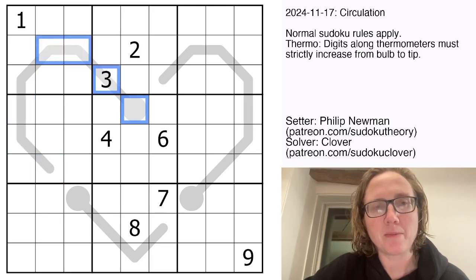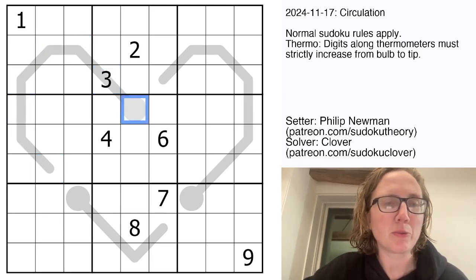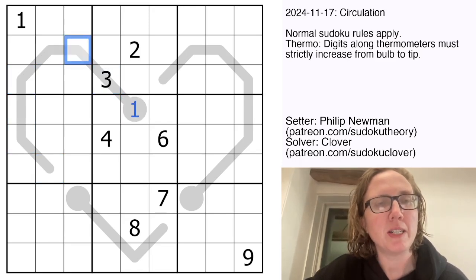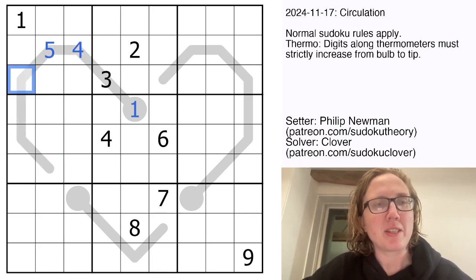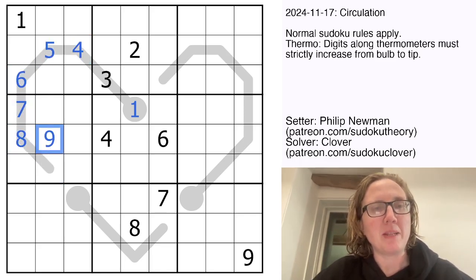So for instance in this very long thermometer, first digit has to be lower than three and it can't be a two so it's a one. And then we have six more cells and we only have six more digits that are bigger that we could put in them so we have to put them in that order.